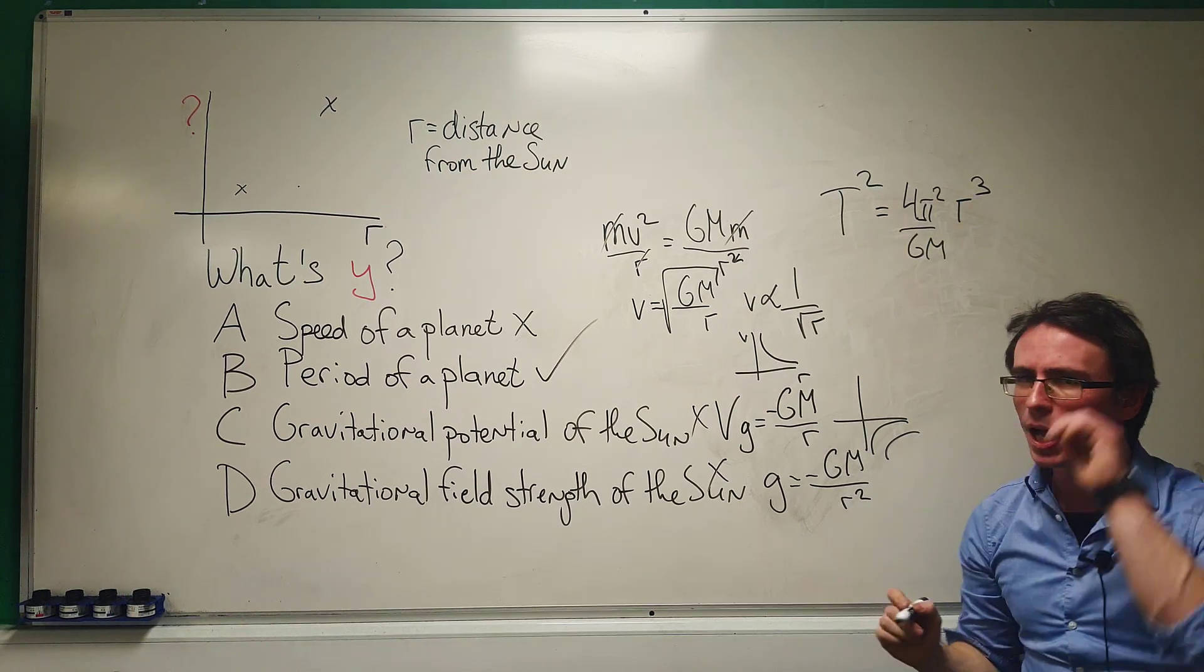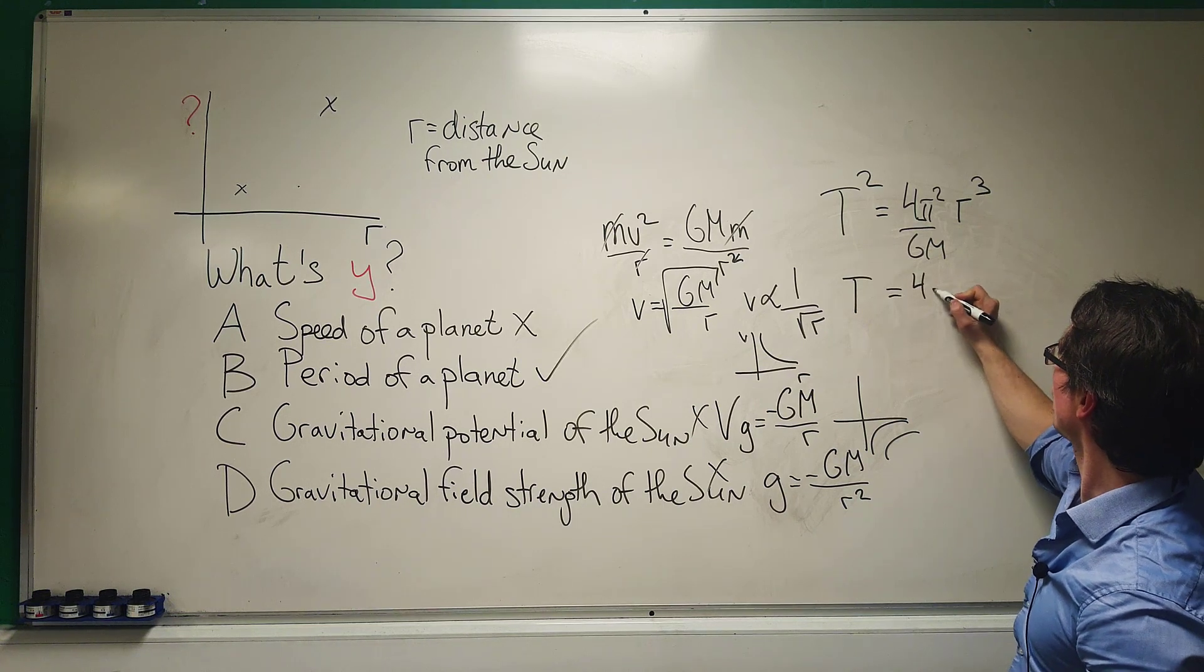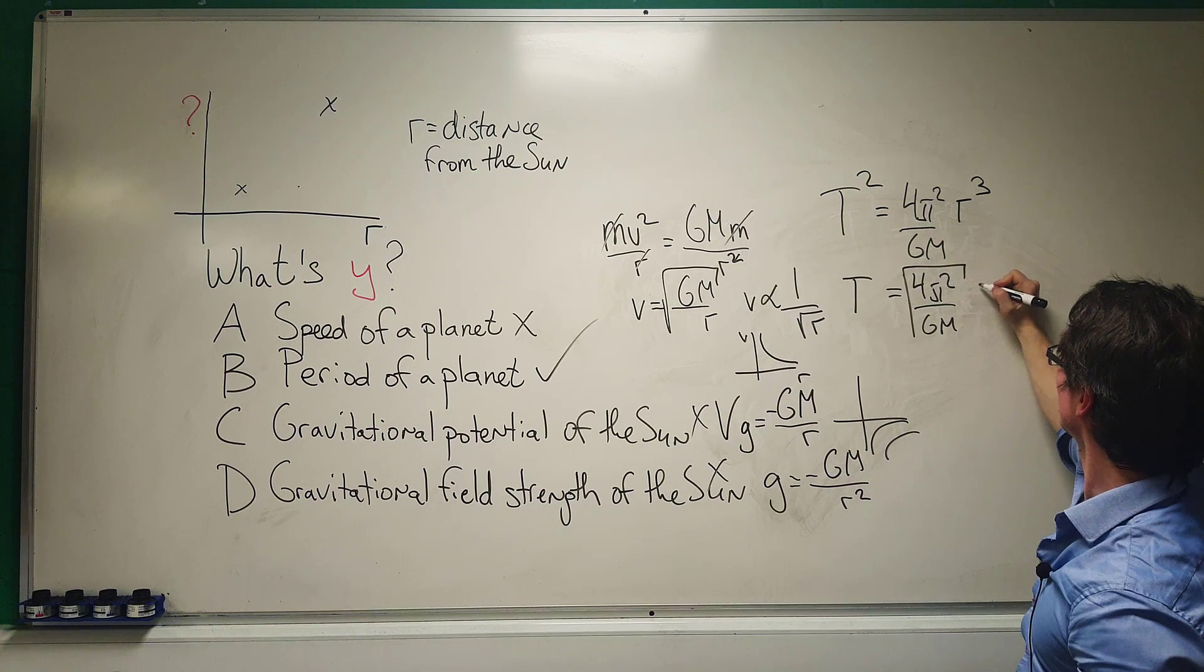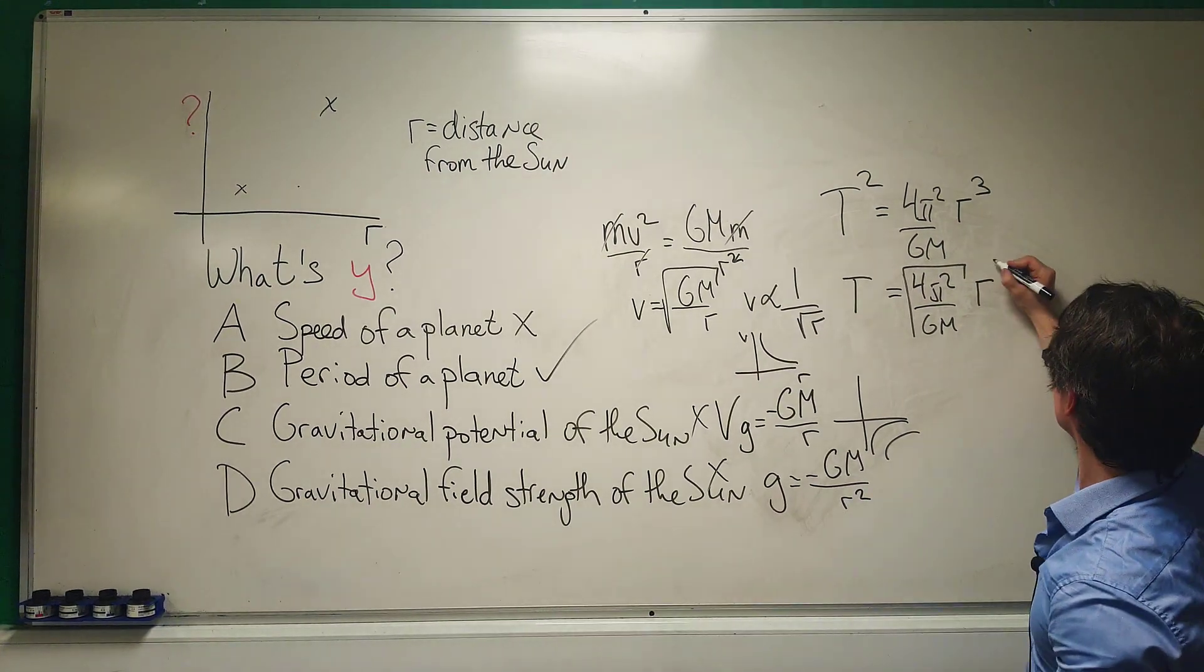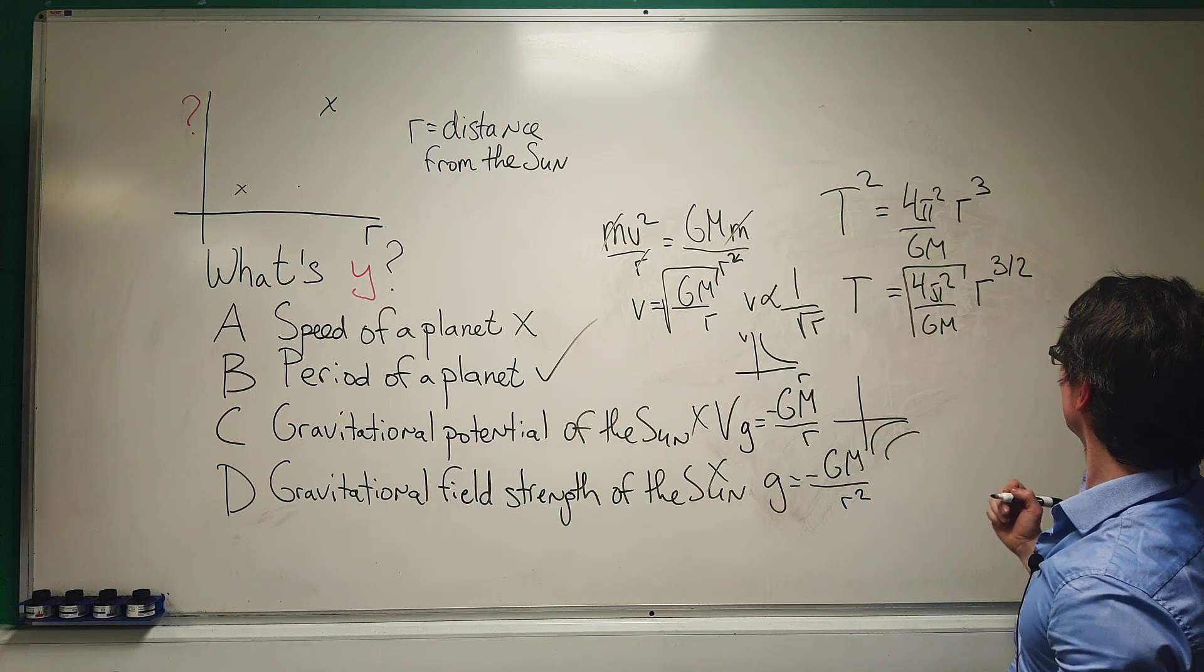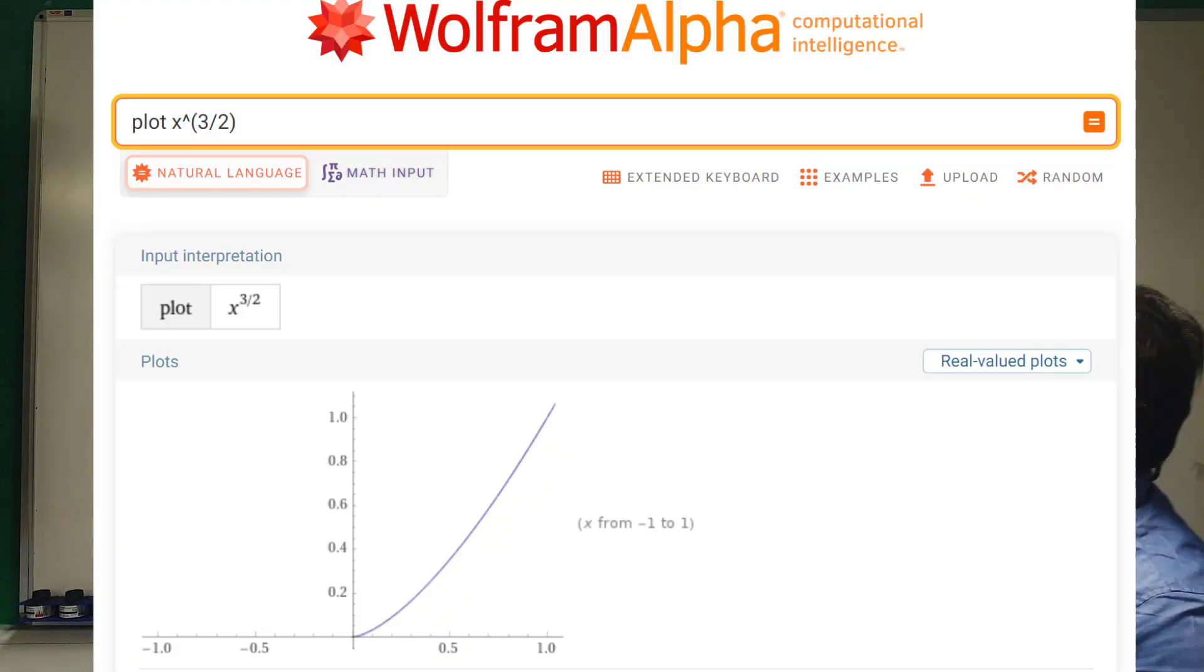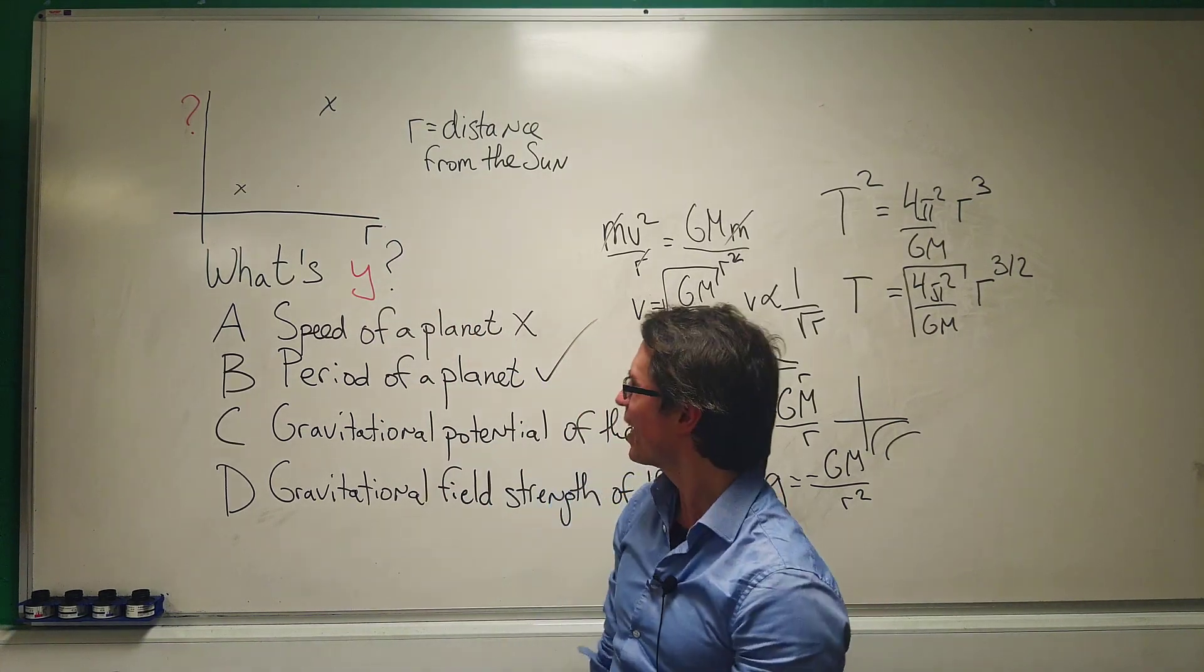So this means that T will be equal to the square root of 4π squared over GM times r cubed. Now the square root of r cubed is just going to be r to the 3 over 2. So the shape of this will actually be very similar to the graph we have here, and therefore the correct answer is B.